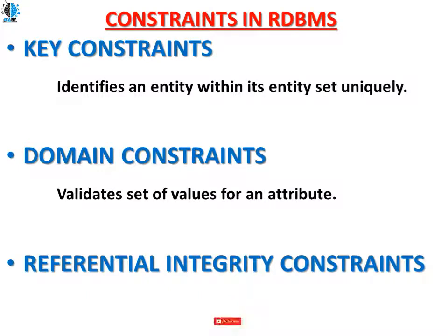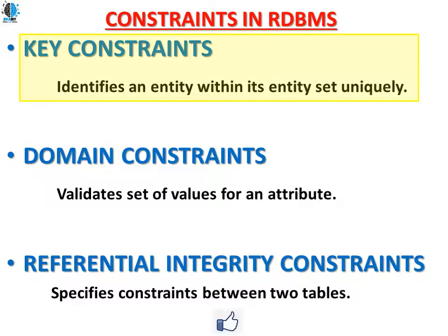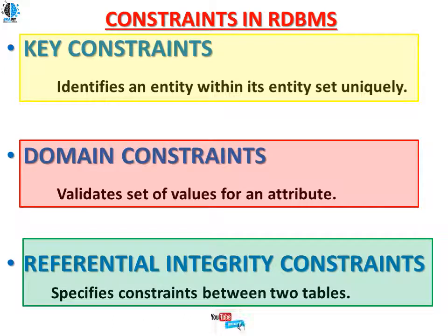Referential integrity constraint specifies constraints between two or more tables — defining how different tables communicate or have a relationship in a database. So, to summarize: key constraints identify entities uniquely within their entity set; domain constraints validate the set of values for an attribute; referential integrity constraints specify constraints between two or more tables.